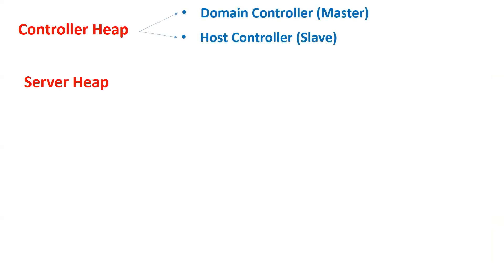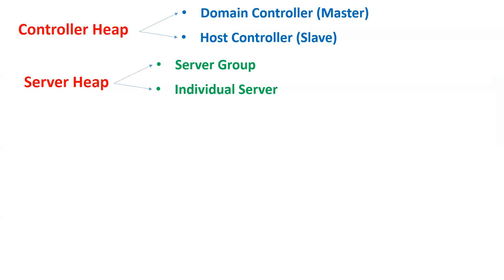When we talk about controller heap, we have two kinds of controllers in JBoss: the domain controller and the host controller. The domain controller is called the master and the host controller is called the slave. In a domain we have only one domain controller (master) and can have multiple slave host controllers running on different servers. For server heap, we have server groups — a grouping of different servers similar to a cluster concept — and individual servers.